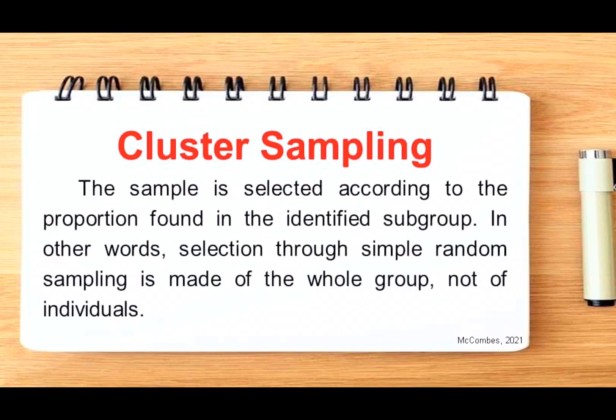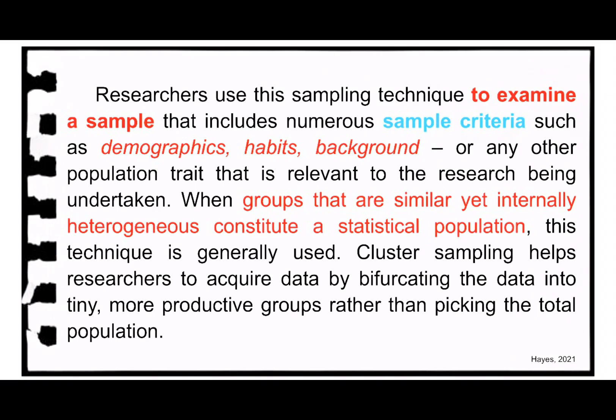Next, we have cluster sampling. In this technique, the sample is selected according to the proportion found in the identified subgroup. Selection through simple random sampling is made of the whole group, not of individuals. Researchers use this sampling technique to examine a sample that includes numerous criteria, such as demographics, habits, background, or any other population trait relevant to the research being undertaken.